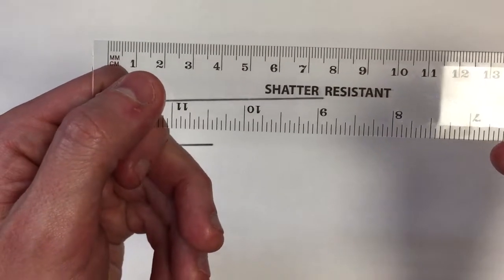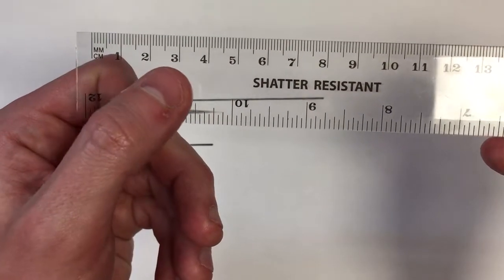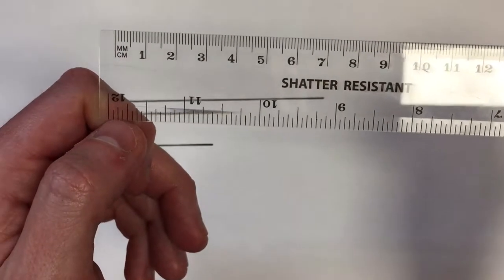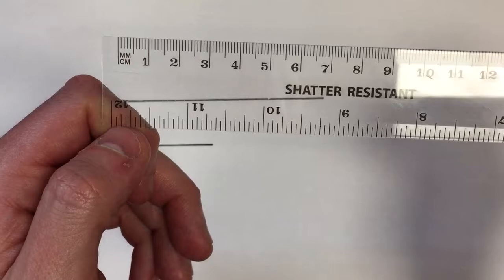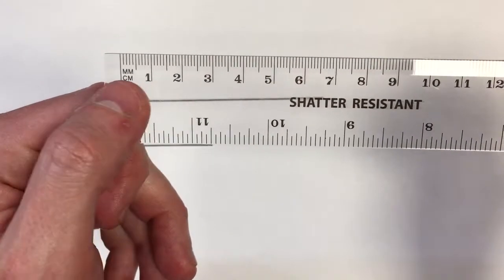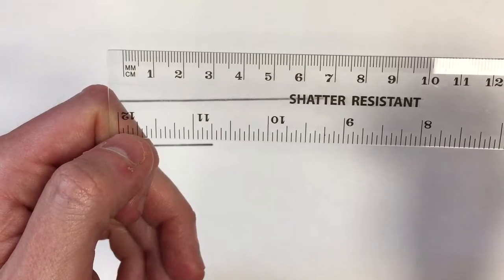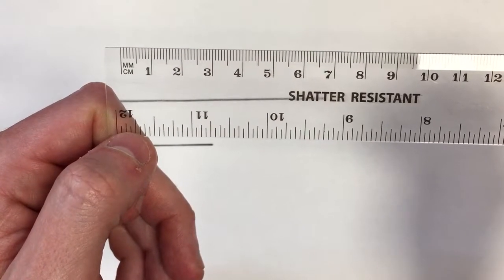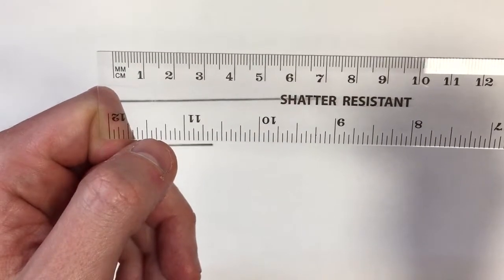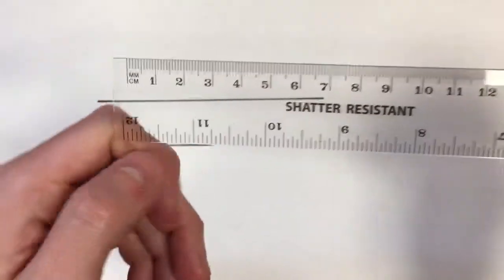The longer dashes with numbers attached are centimeters. In every centimeter there are ten millimeters, which is why you've got ten smaller dashes in between each whole number. Halfway between the centimeters, the lines are slightly longer—that's one and a half centimeters, two and a half centimeters, and so on.